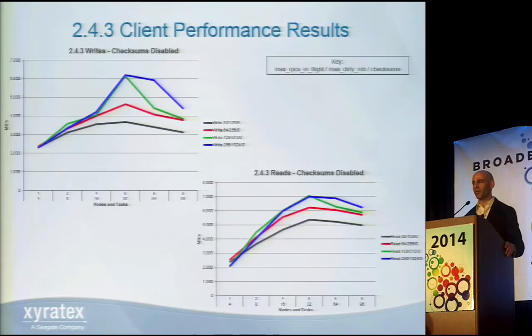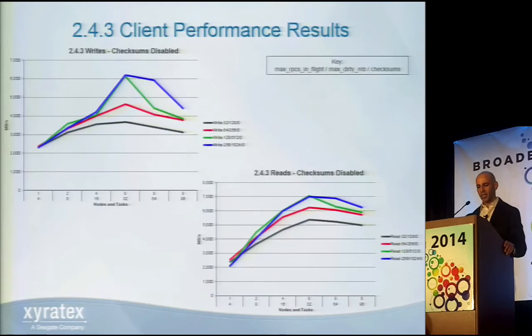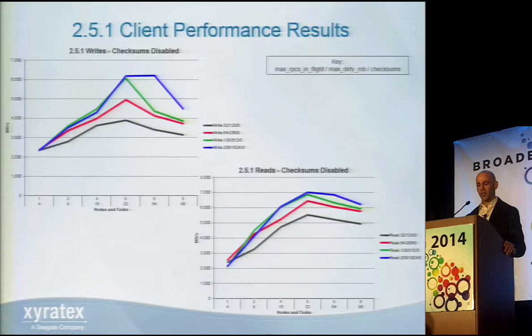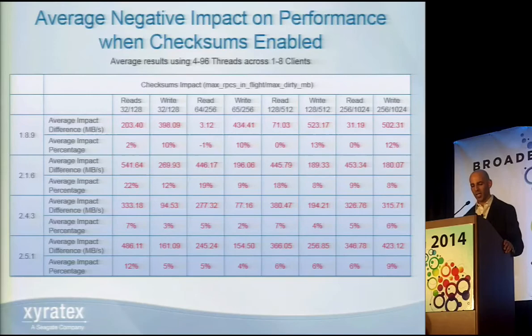2.5.1 almost followed the same curve as 2.4.3 on reads, with a slight improvement at 256 max RPCs in flight. There was almost parallel performance with no degradation going from 32 to 64 threads. Looking at the overall storage throughput, standardizing from 4 to 96 threads and averaging the data to examine the checksum impact — the results were very different from single thread performance results.